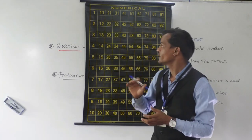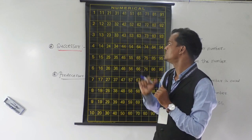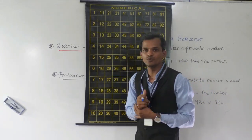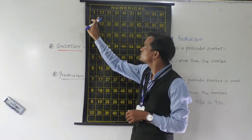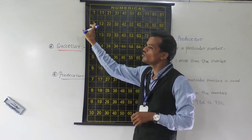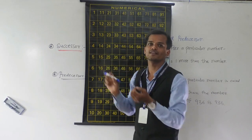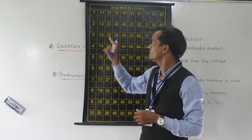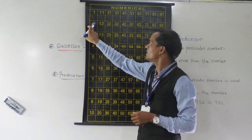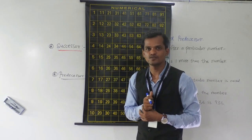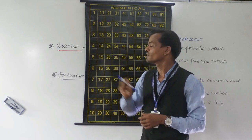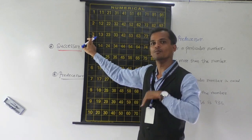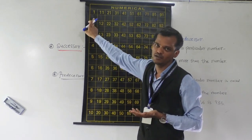So we can observe: after 1, 2 comes — this 2 is 1 more than 1. Then after 2, 3 comes — this 3 is 1 more than 2.